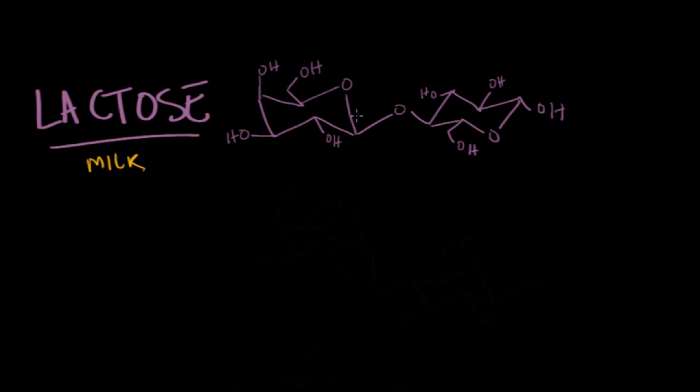We've got the 1 and the 4, and this is a glycoside bond, and this one happens to be in the beta orientation. So lactose is a disaccharide made of galactose and glucose joined together by a beta 1,4 glycoside bond.